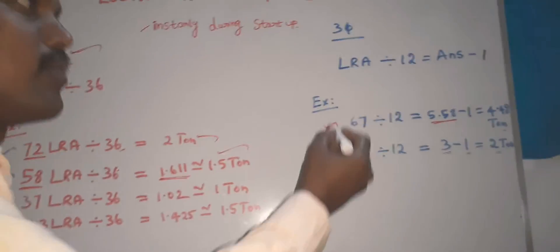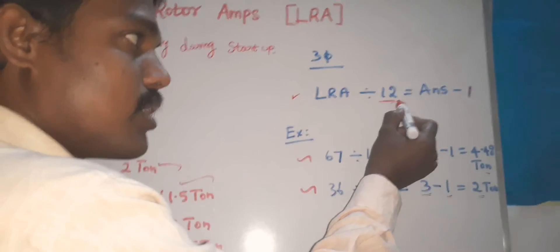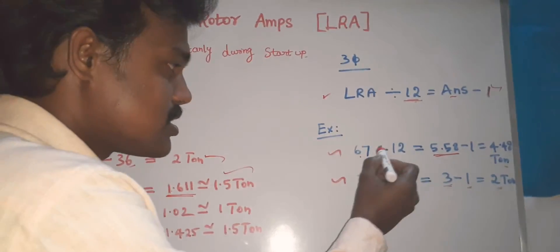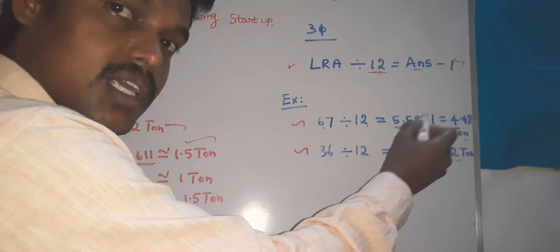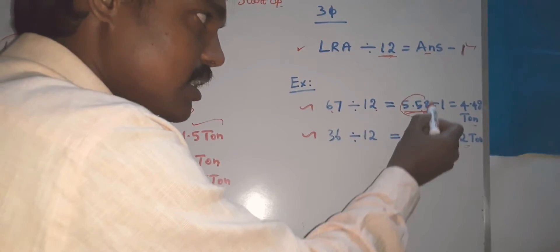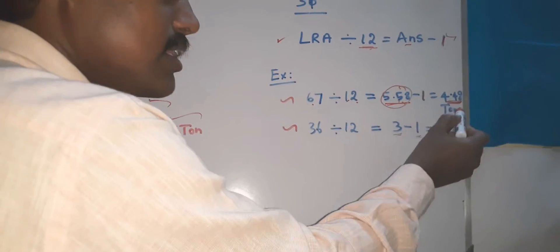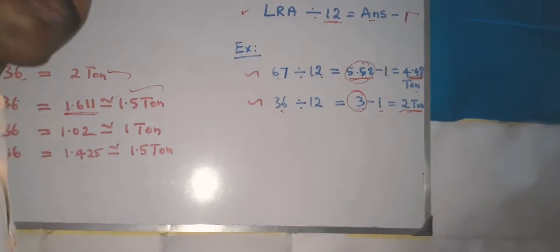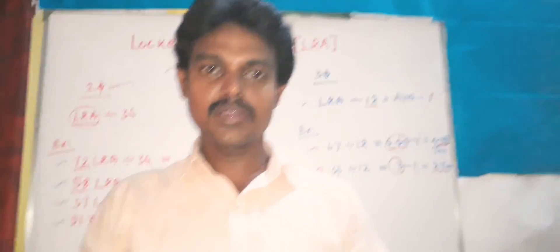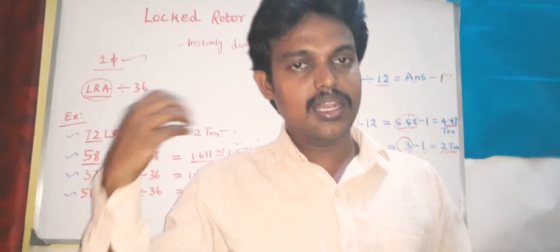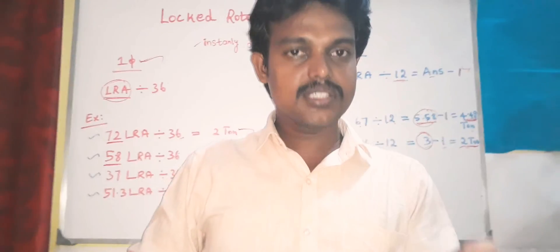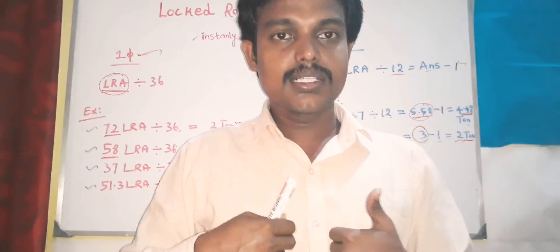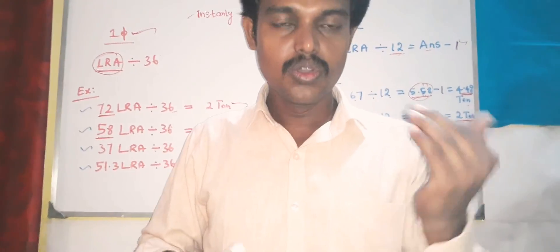If you are doing 3-phase, this is the formula. For example, 67 divided by 12 gives 5.58, that is minus 1 — so 4.48 — that is the answer. For example, with 36, this is the thumb rule. In case you need to explain it, you will know if you apply it.